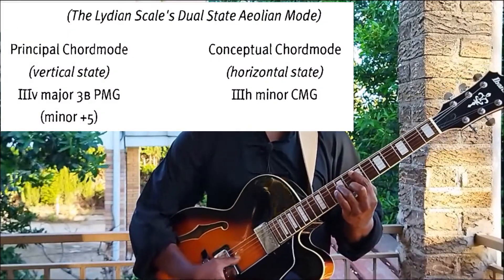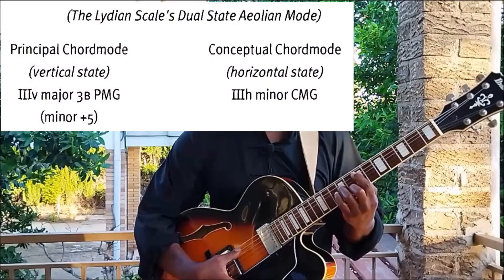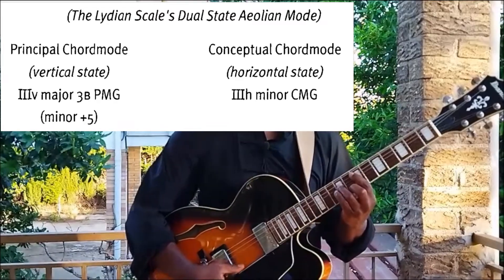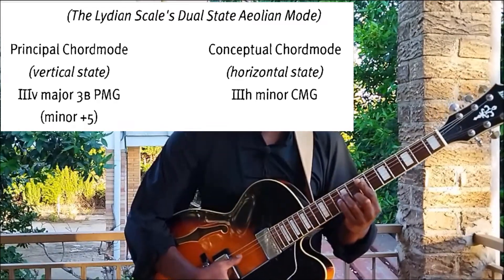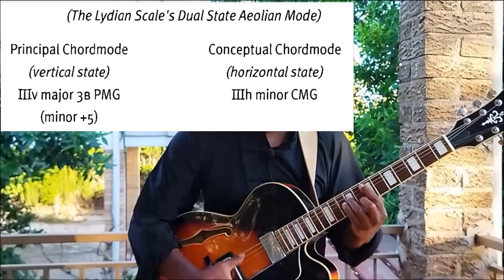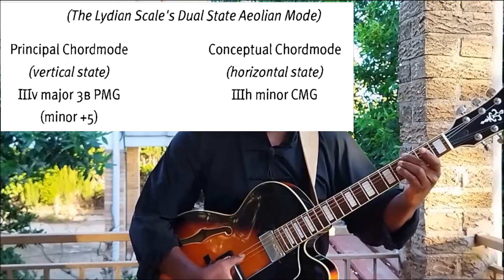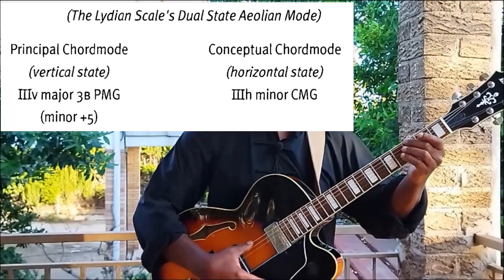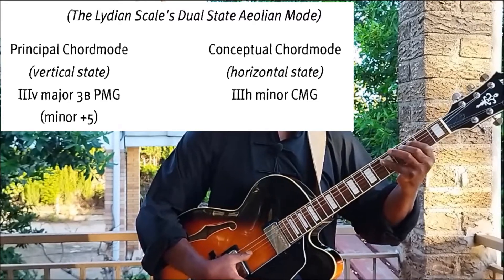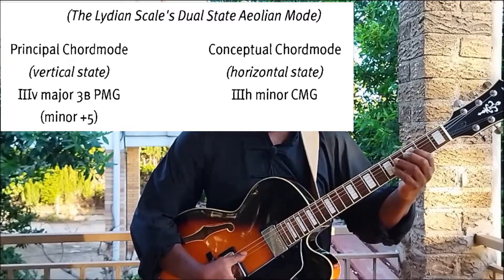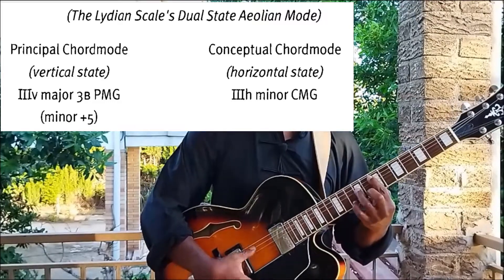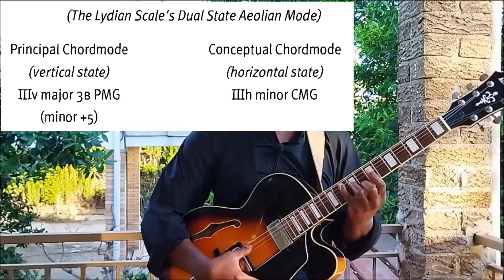Now the third one — this E — is actually the sixth of G: one, two, three, four, five, six. That makes it the relative minor of G.